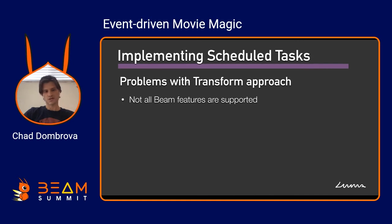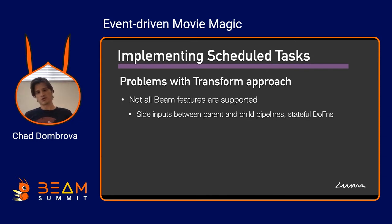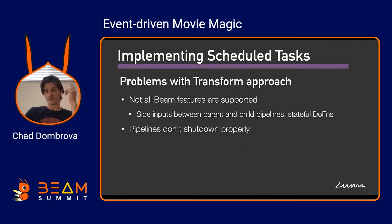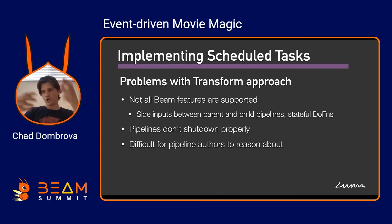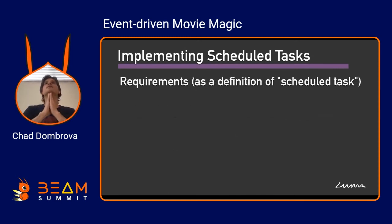But there are some problems. Not all Beam features are supported — those child pipelines are kind of crudely bolted into the parent pipeline; we're using Pub/Sub to manually send and synchronize data between them, so things like side inputs between parent and child don't work because the child pipelines are opaque to the parent. Another issue is that the pipelines don't shut down properly, related to Pub/Sub and streaming pipeline relationships. And it was difficult for pipeline authors to reason about behavior, because how data streams from the parent into the child and back is kind of our own hacky solution. So we said: we can do better than this.